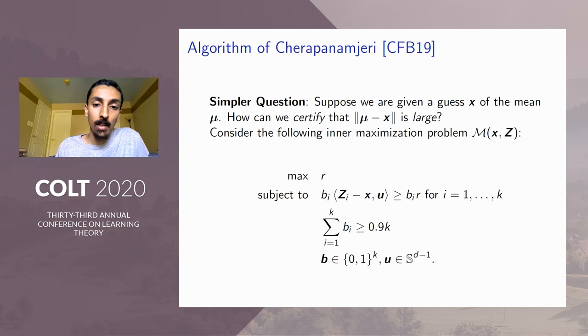So now I'm going to go over the previous algorithm and then describe how we actually improve the running time of the past one. So let's consider the simpler question of, suppose that we were just given a guess x of the true mean μ. How would we certify that this guess x is far from the true mean?